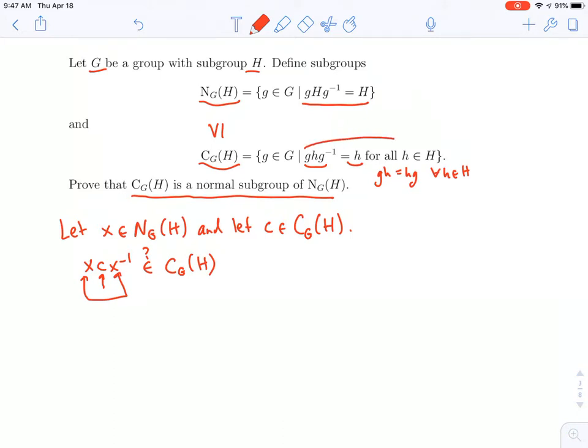What was that condition? The condition to be in the centralizer of H is that if you conjugate any element of H by that given element, you get back the exact same element of H. So I need to take an element of H, so let's call that little h, and I need to conjugate it by this element, xcx inverse.